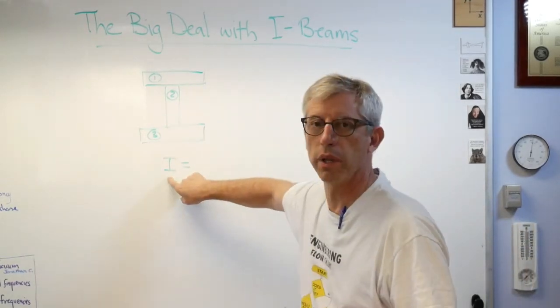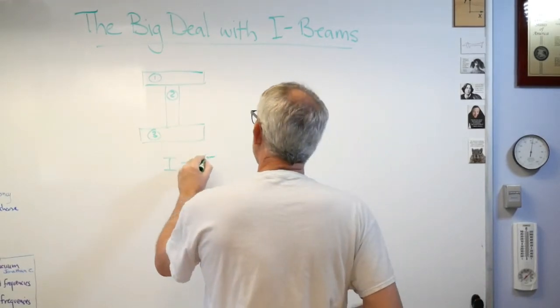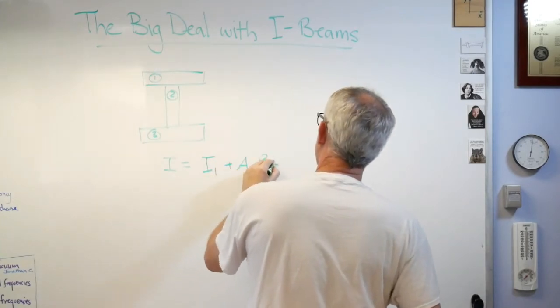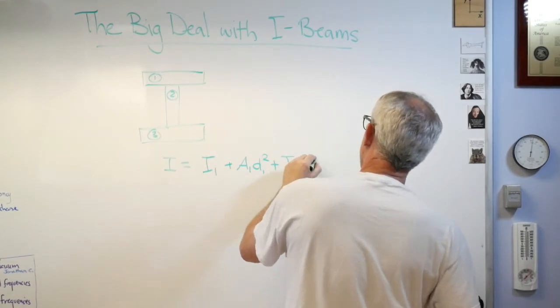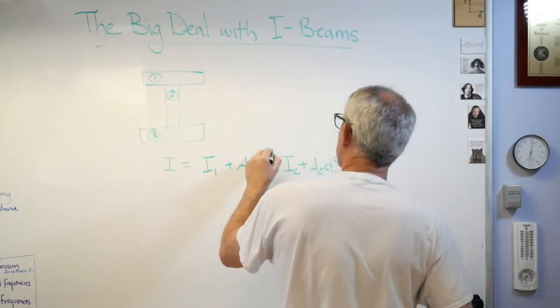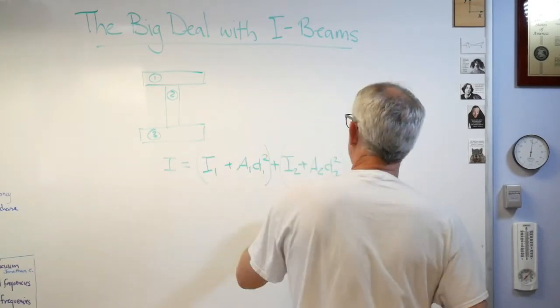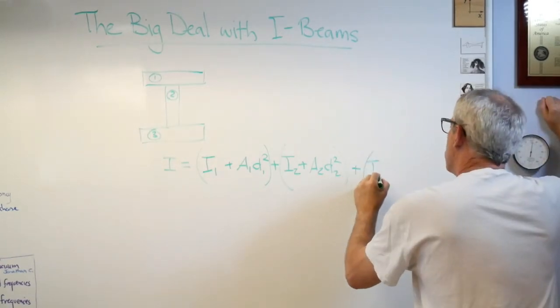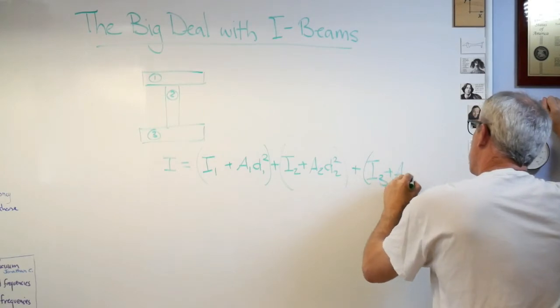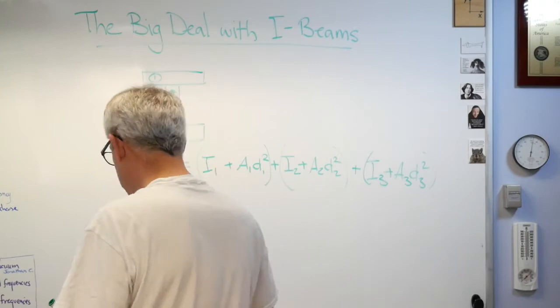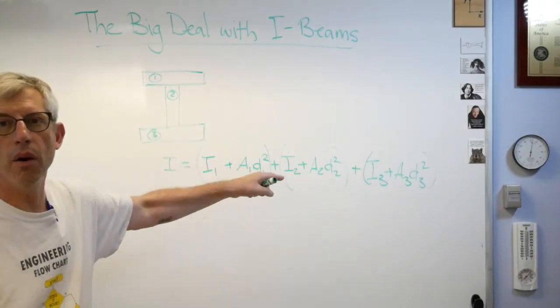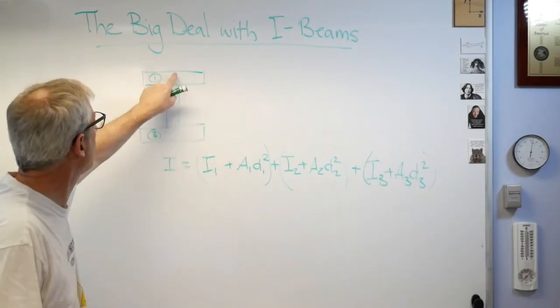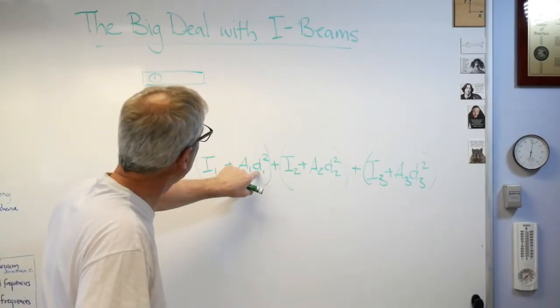I wish it wasn't identified with the letter I, but it is. So this is an I-beam, and this just happens to be the letter I for area moment of inertia. So there's an area moment of inertia of element one plus A₁d₁² plus I₂ plus A₂d₂². Let's maybe put some parentheses around that. This is called the parallel axis theorem, and it's how you assemble the area moment of inertia out of simple shapes—these are just rectangles.